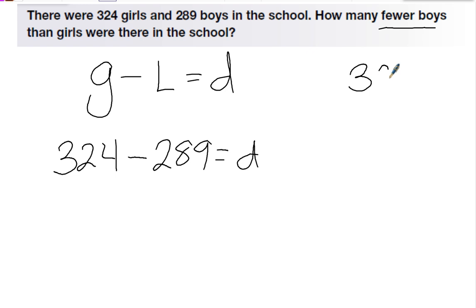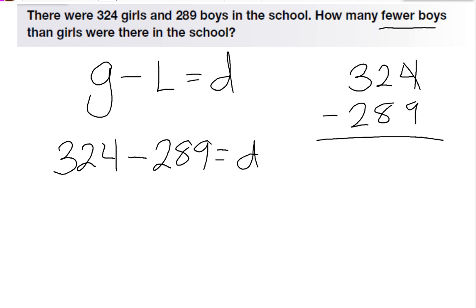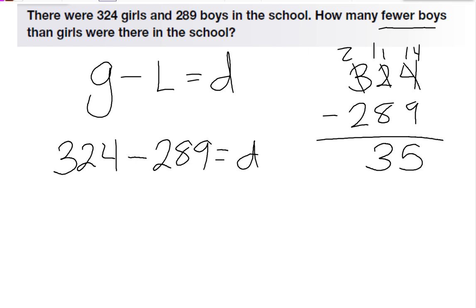When we subtract, we need to stack the numbers on top of each other. We need to borrow: 14 minus 9 is 5. Borrow again: 11 minus 8 is 3. So there were 35 fewer boys at the school than girls.